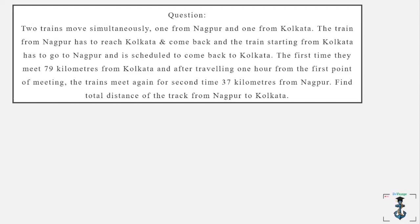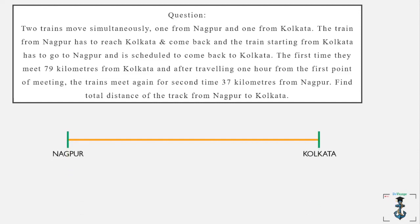So let's make a diagram — let's make a track here. I've got a track and I'll label both the places, Nagpur and Kolkata. Now it says that they meet for the first time 37 kilometers from Nagpur. So let's plot that.